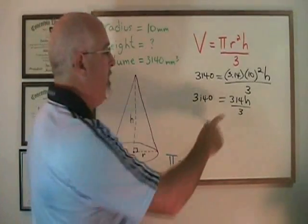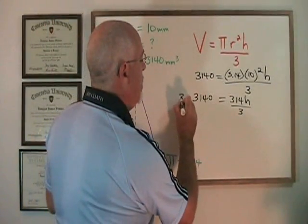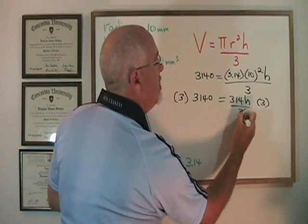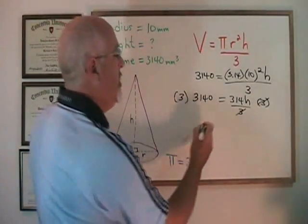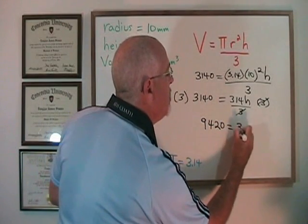In order to avoid doing this division, which would give me a long decimal, I'm going to multiply both sides by 3 so that these 3's cancel. We end up with 9420 equals 314h.